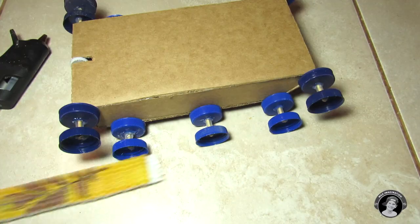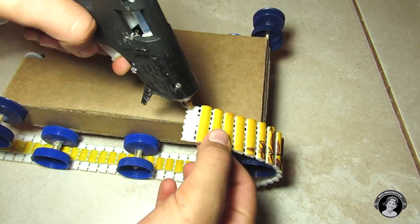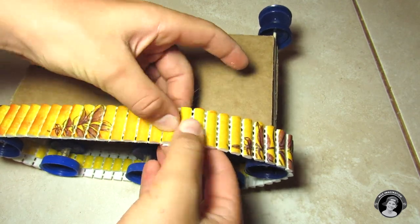Then you are going to take the treads and pull them around the tank tread wheels, and then you are going to connect them up with some hot glue.